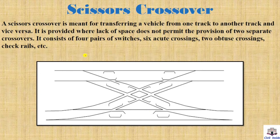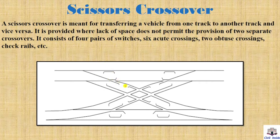Next is the scissors crossover. A scissors crossover is meant for transferring a vehicle from one track to another and vice versa. It is provided where lack of space does not permit the provision of two separate crossings. It consists of four pairs of switches, six acute crossings, two obtuse crossings, check rails, and other components.